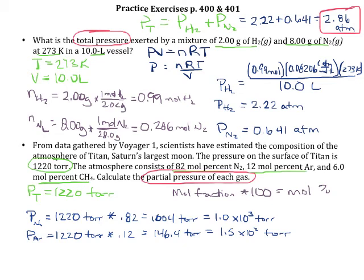Lastly, we do that for CH₄. The total pressure is 1,220 torr, and only 6% of that is due to methane, so we multiply by 0.06. When you do that math, you get 73.2 torr, which we round to just 73 torr.